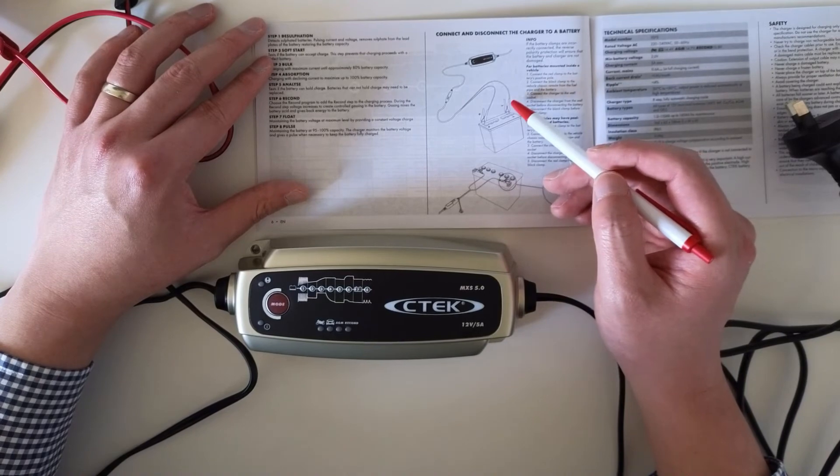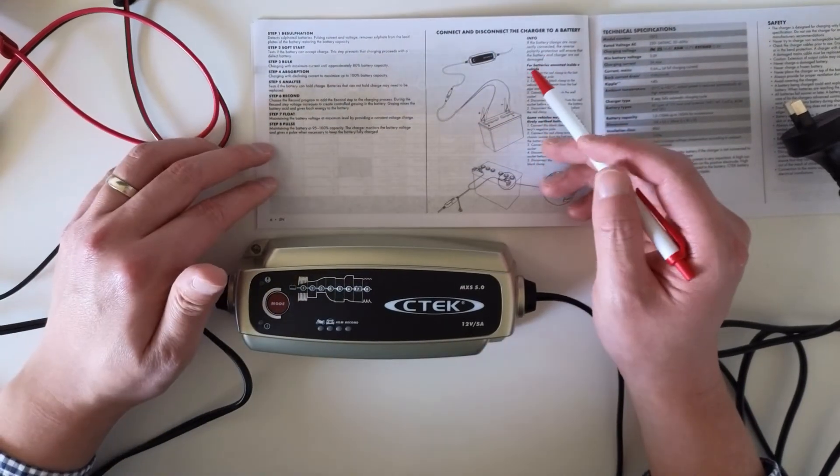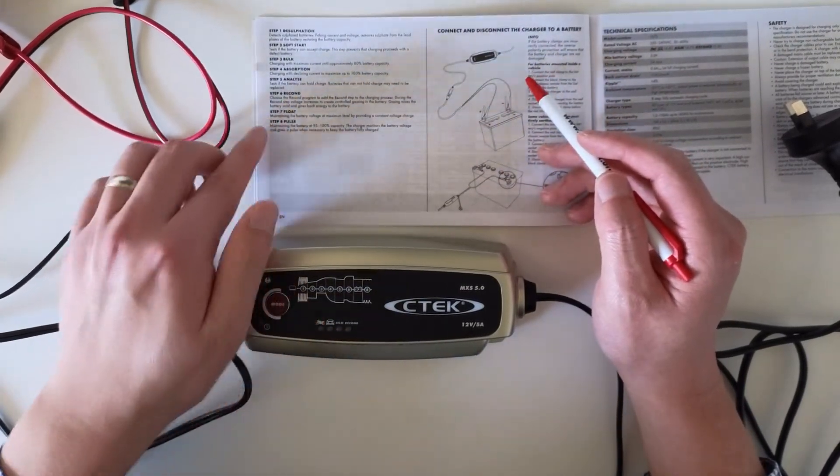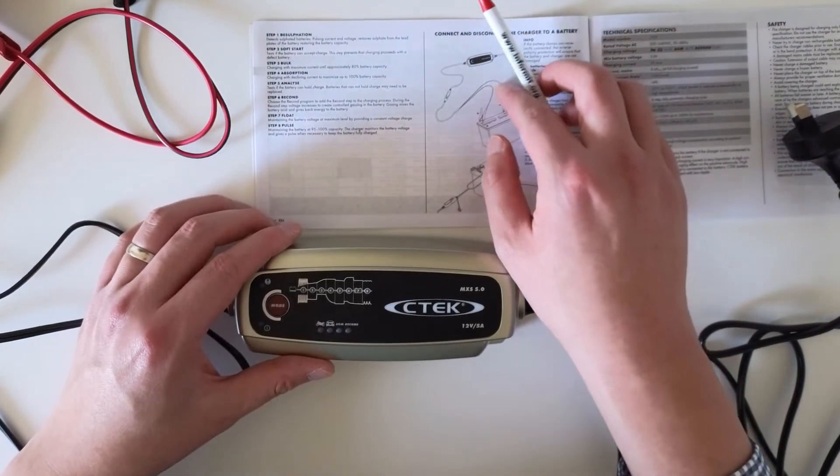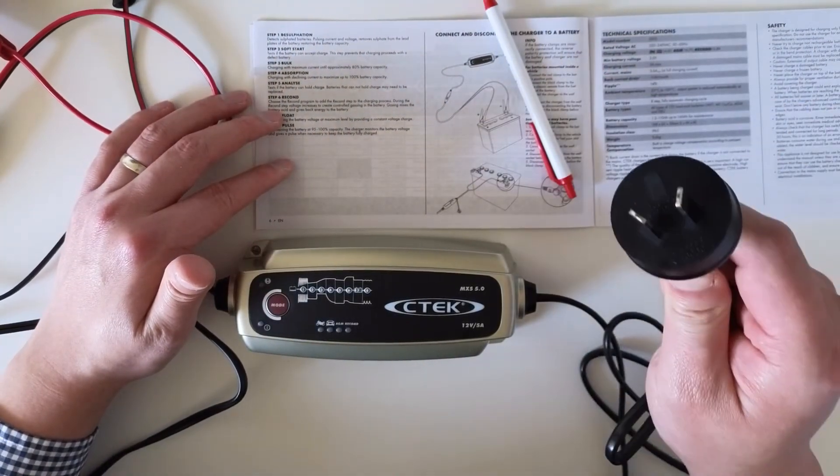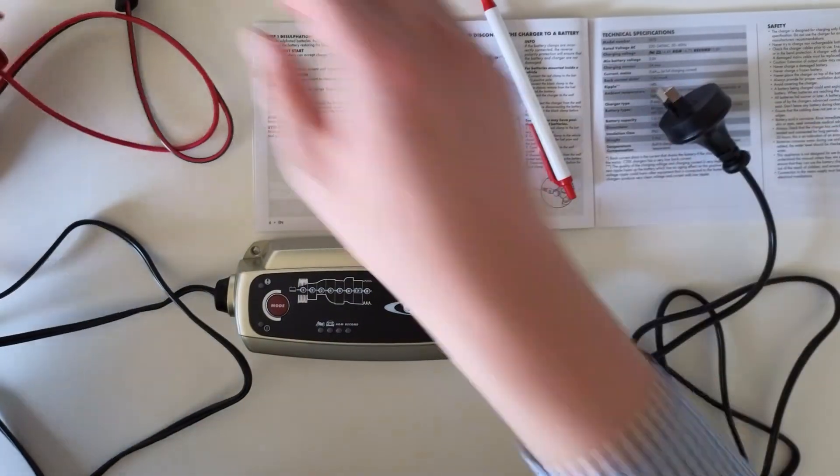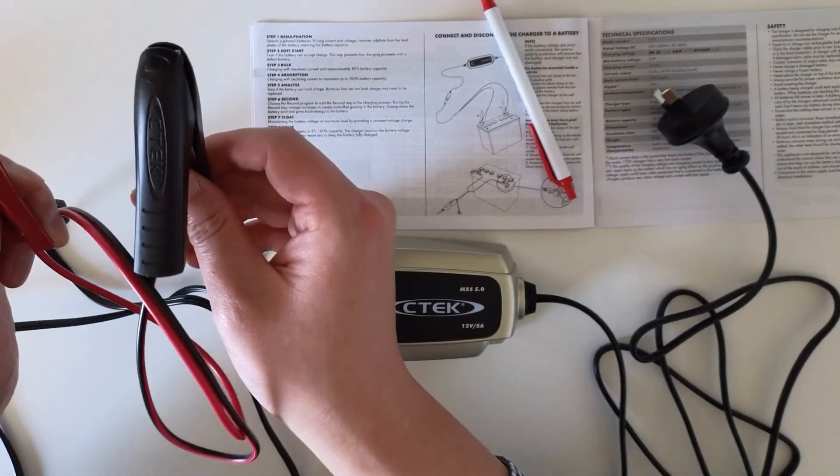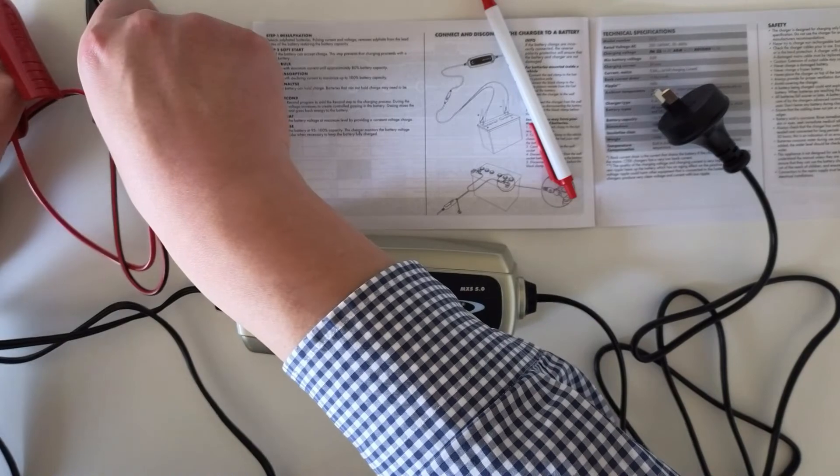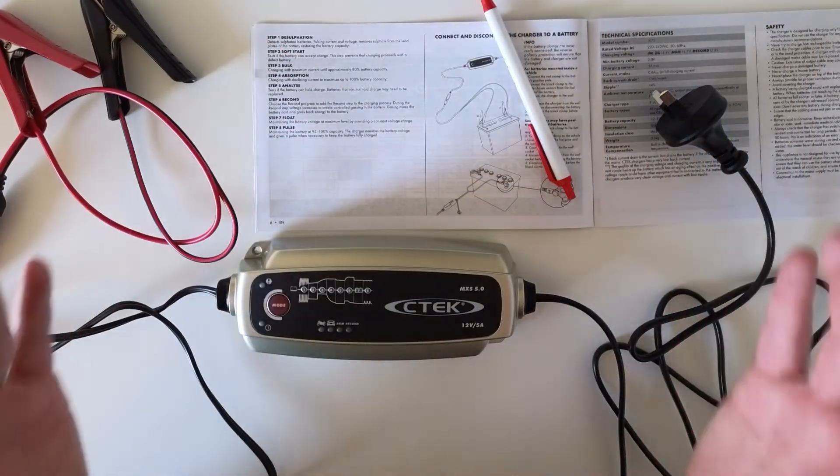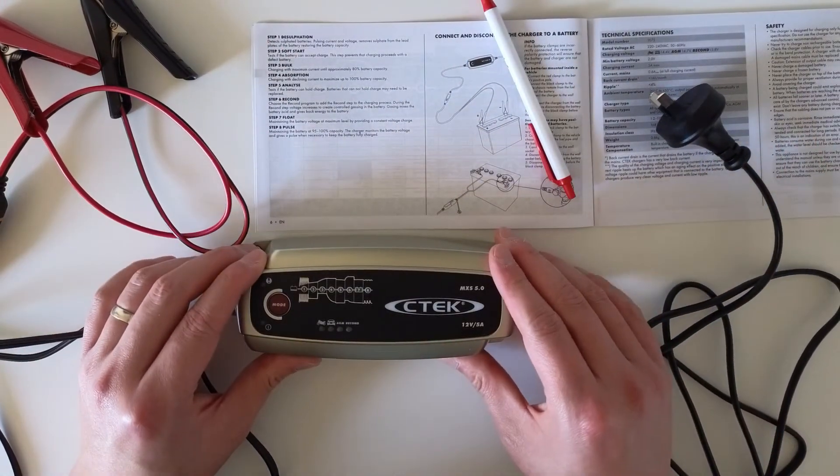Once you reach step seven, what you need to do is unplug it and then remove the clamps from the battery. And that's the whole process of using this charger.